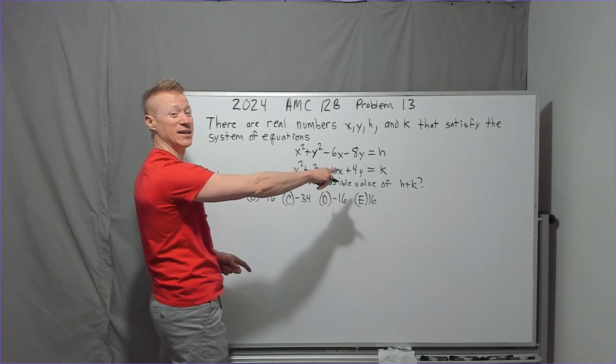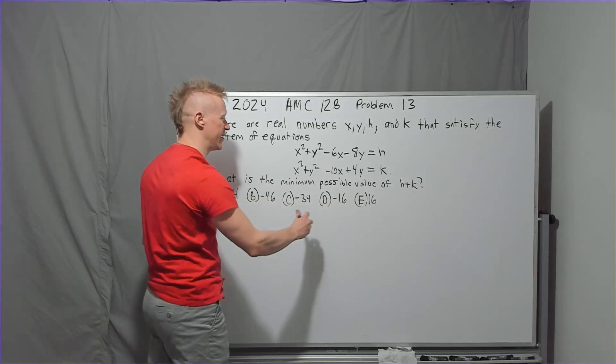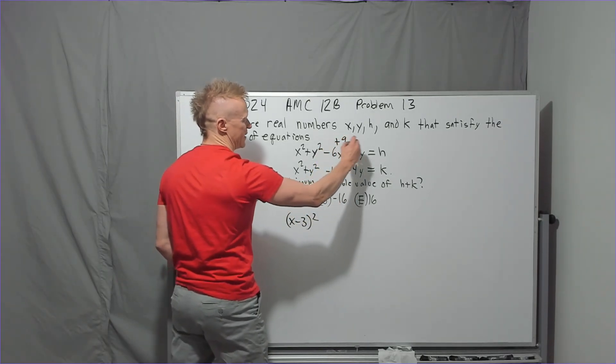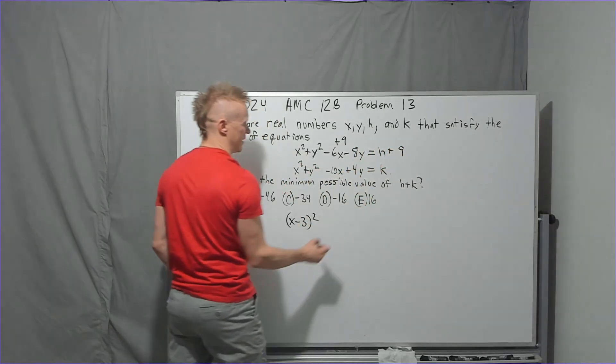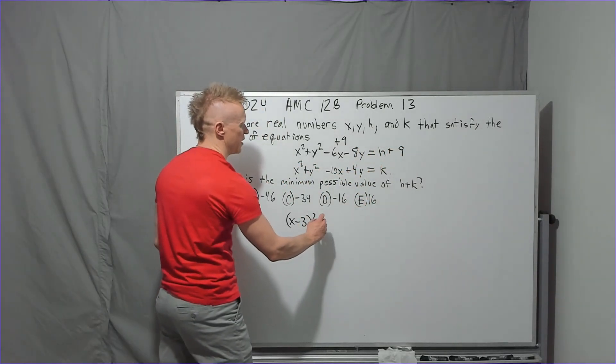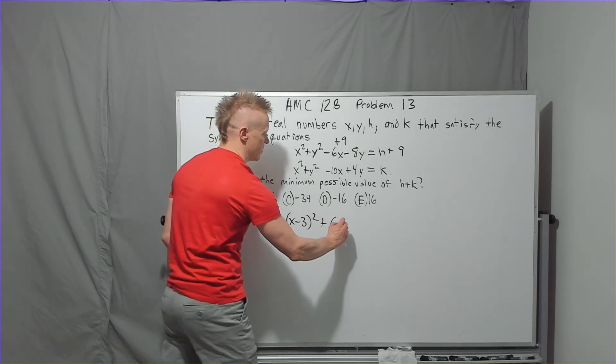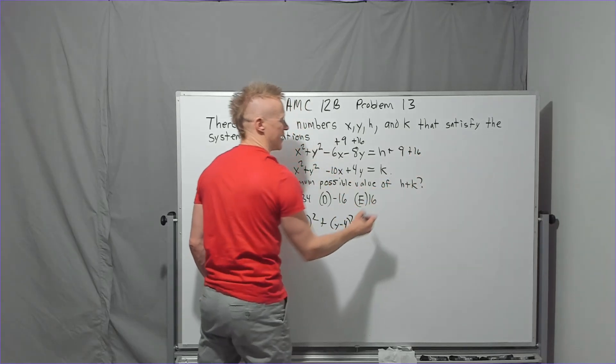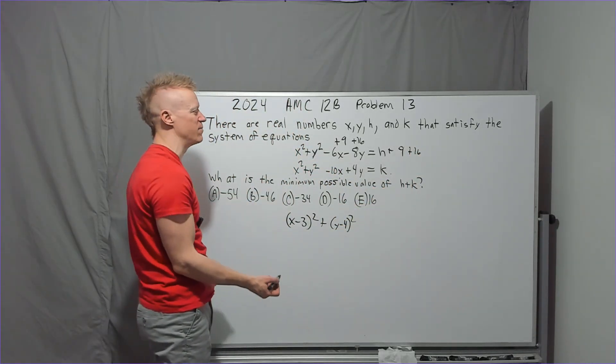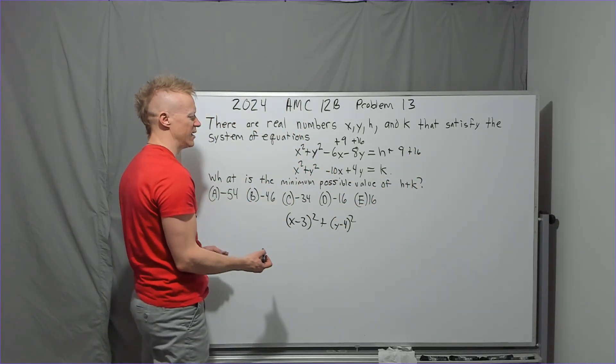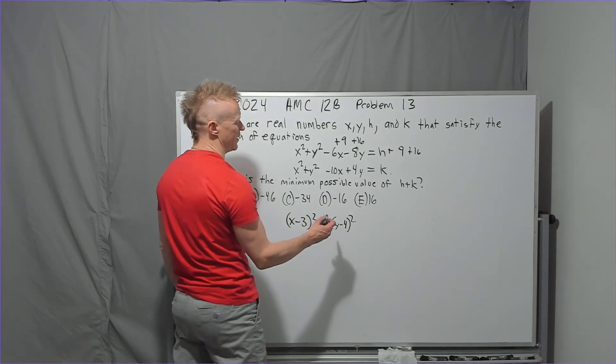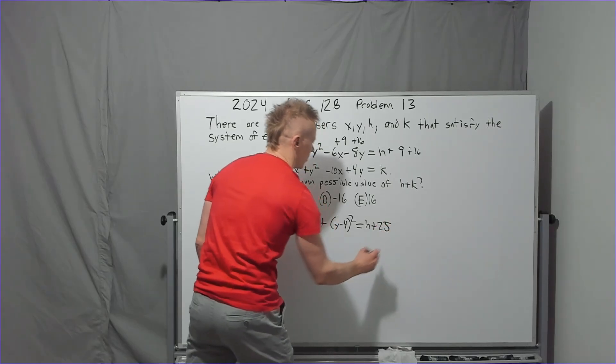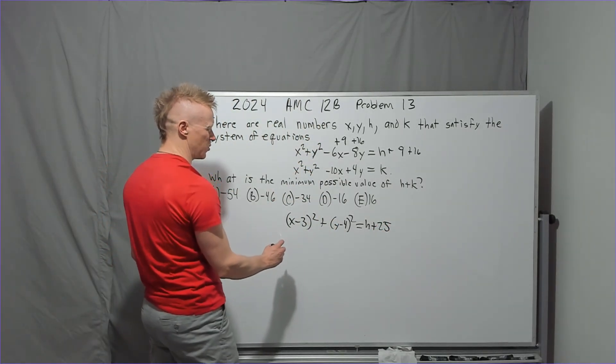You're going to get x minus 3 squared. If you don't understand, we're adding 9 and we're adding 9. So you get x minus 3 squared plus y minus 4 squared. For that one, I have to add 16, and you have to add 16, or subtract it from this side as well. And so you've got that, and you'll have equals h plus 25. Then you do the same thing on this one.